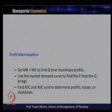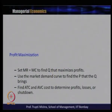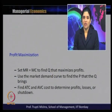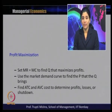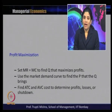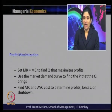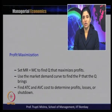Using the demand curve, the firm finds the price at which consumers are willing to buy that quantity. The steps for profit maximization are: first, set MR = MC to find Q that maximizes profit; then use the market demand curve to find the corresponding price P; and finally find average total cost and average variable cost to determine profit, loss, or shutdown.